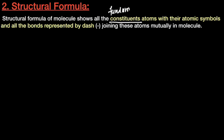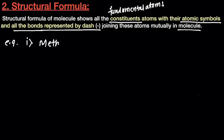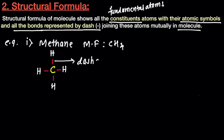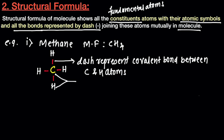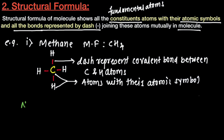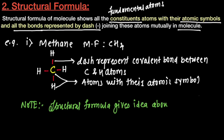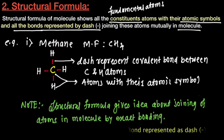Next is the structural formula. The structural formula of a molecule shows all the constituent atoms with their atomic symbols and all the bonds, represented by dashes joining them to form the molecule. For example, in methane (CH4), the central carbon atom is attached to 4 hydrogen atoms by dashes, where each dash represents a covalent bond.